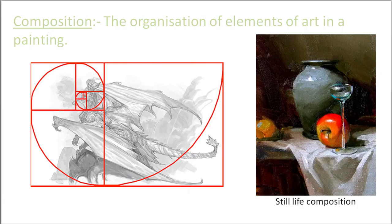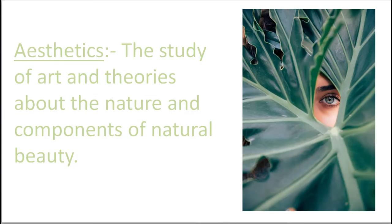The organization of elements of art in a painting is called composition. It is an adjustment of elements or objects on the paper or picture frame. The study of art and theories about the nature and components of natural beauty is called aesthetics.